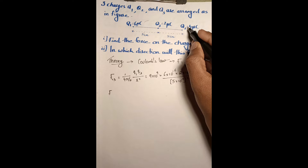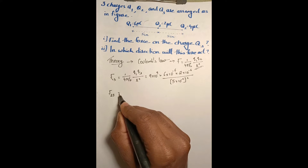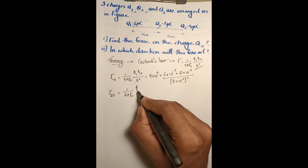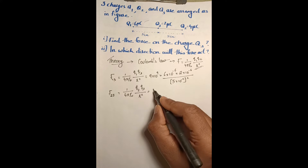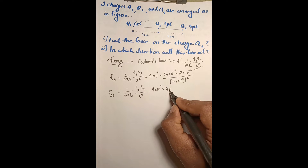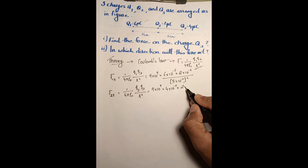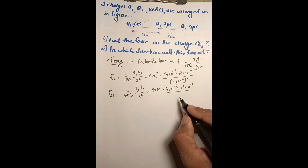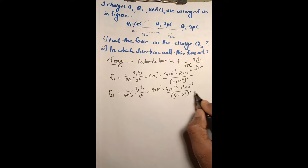Similarly, the force exerted by the second charge on the third charge, F23, equals 1 over 4 pi epsilon-zero times q2 times q3 divided by r squared. Substituting: 9 times 10 to the 9, times 4 times 10 to the minus 6, times 2 times 10 to the minus 6, divided by 5 times 10 to the minus 2 — the whole squared. The distance between q2 and q3 is also 5 centimeters.